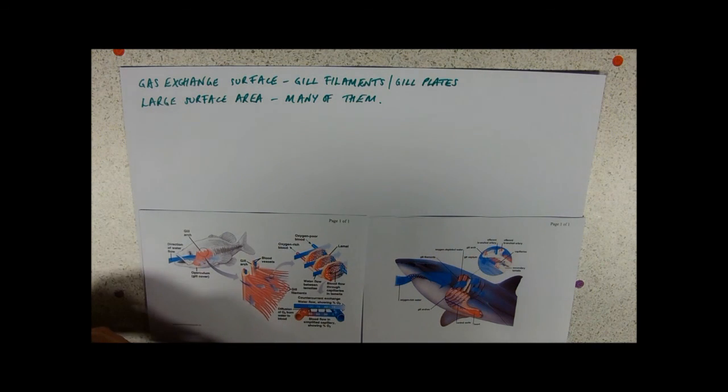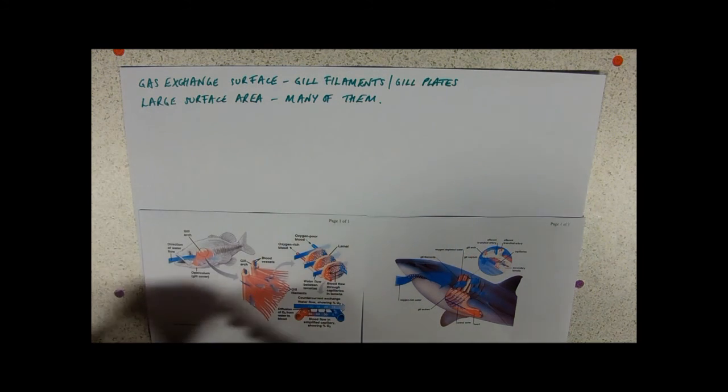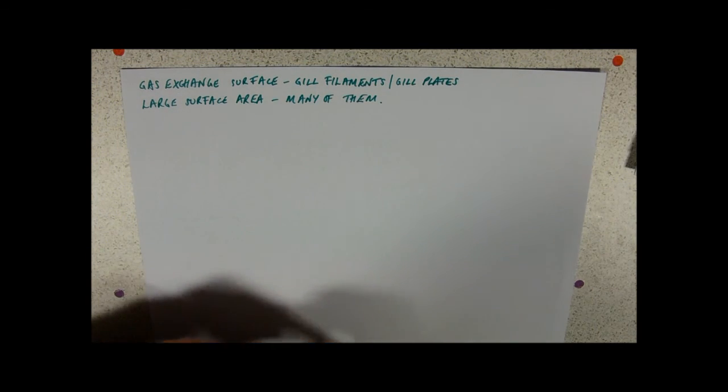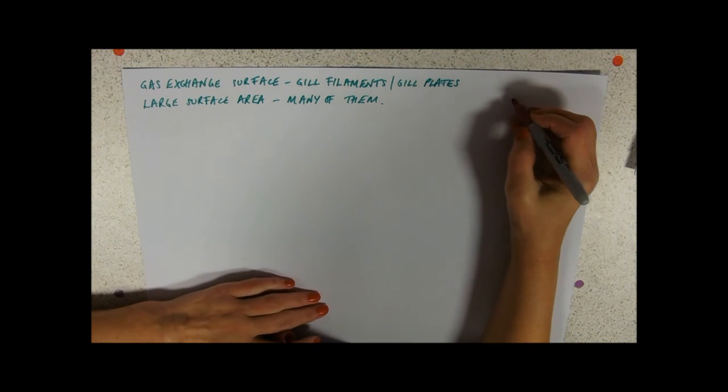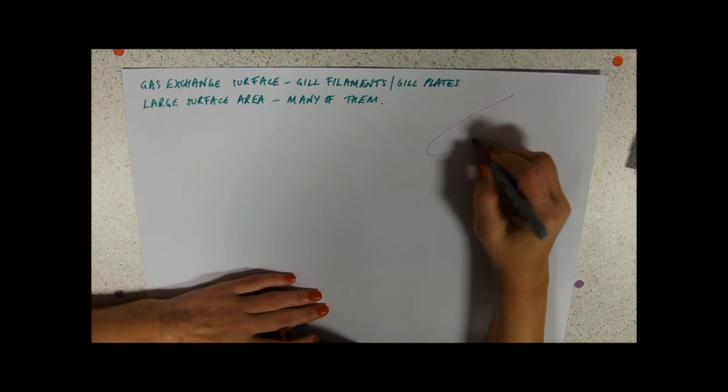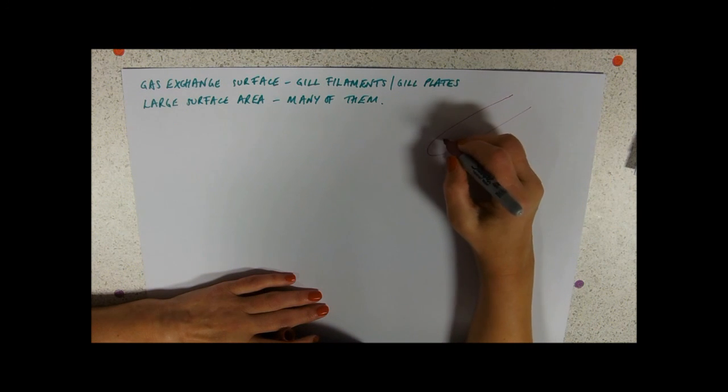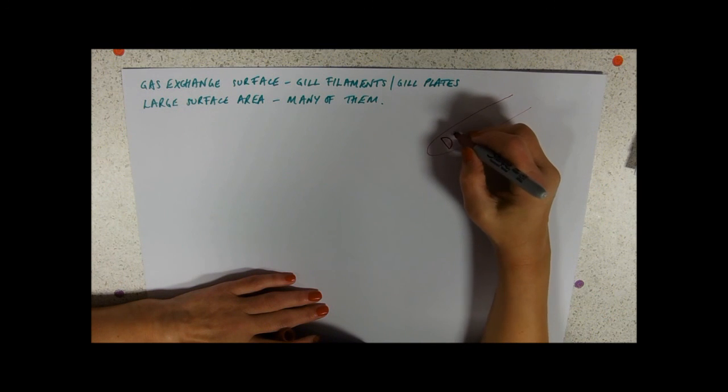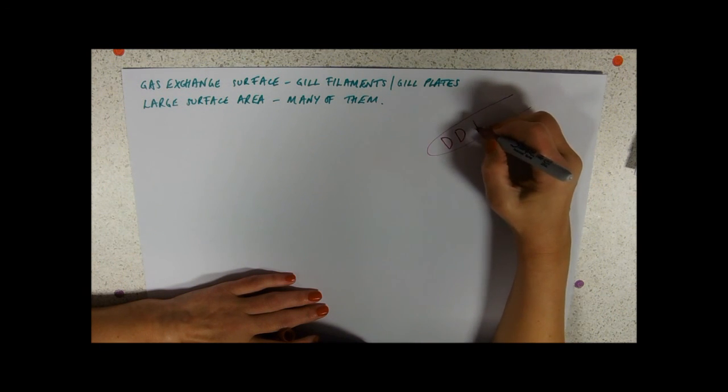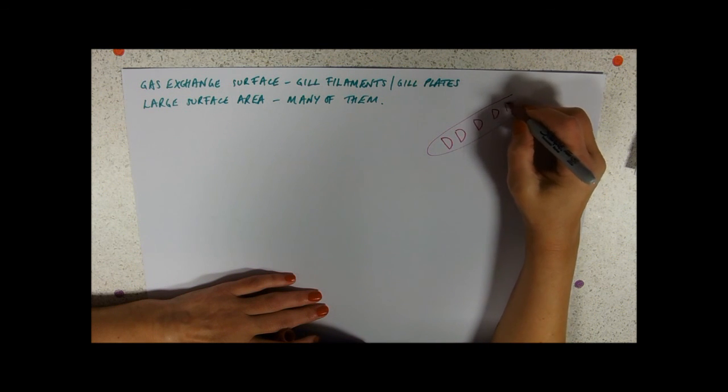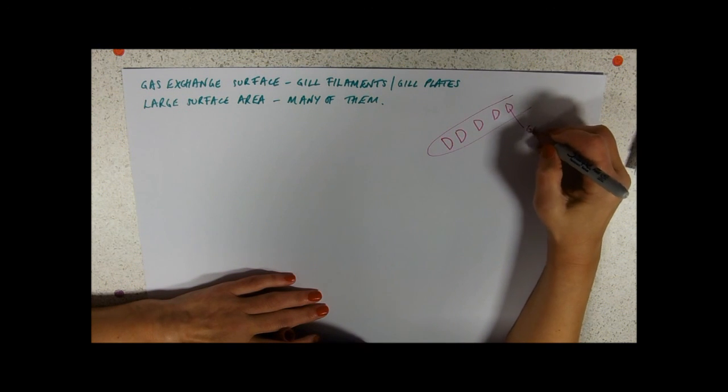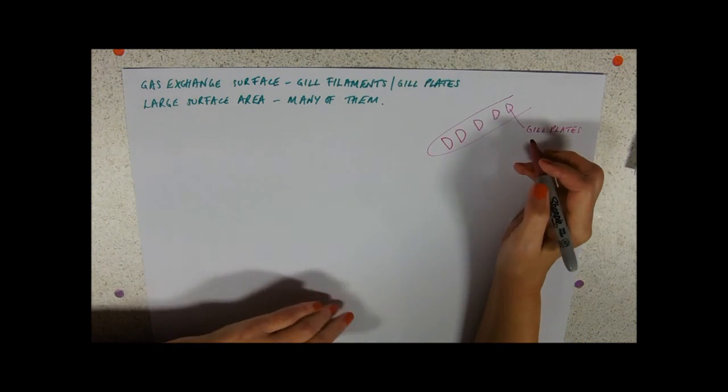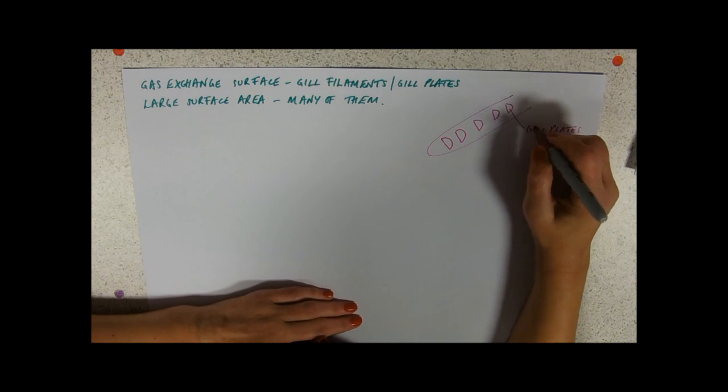So, let's talk about gill plates then. I'm just going to take my shark and my fish away for a minute. If we look at a gill filament, the gill filaments stick out from the gill arch like that. And every so often along each gill filament, there are little raised sort of D shapes called gill plates. Now, obviously, if you've got lots of those on the top of each filament, then you're going to get an increased surface area again.